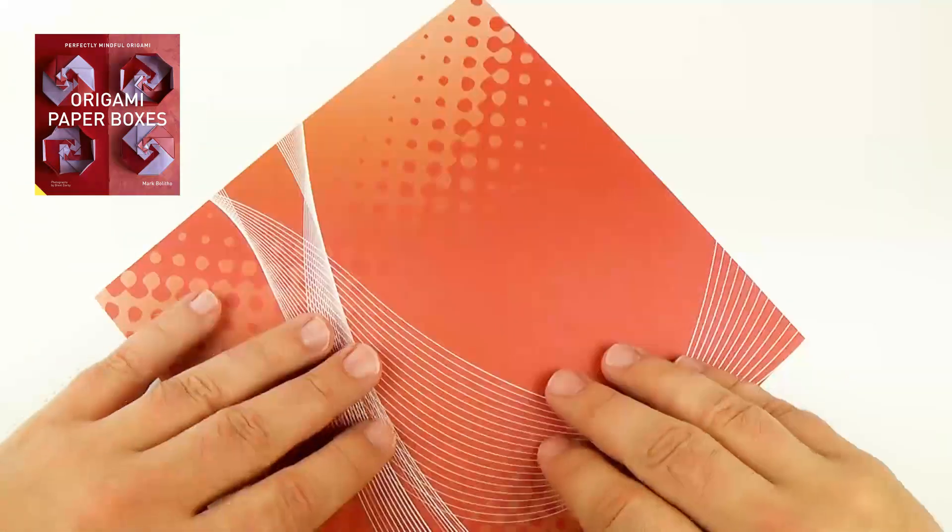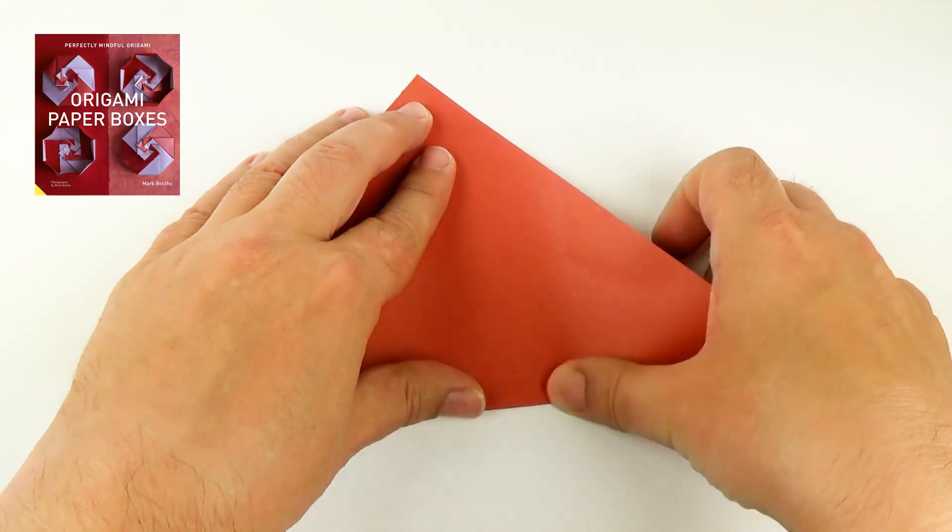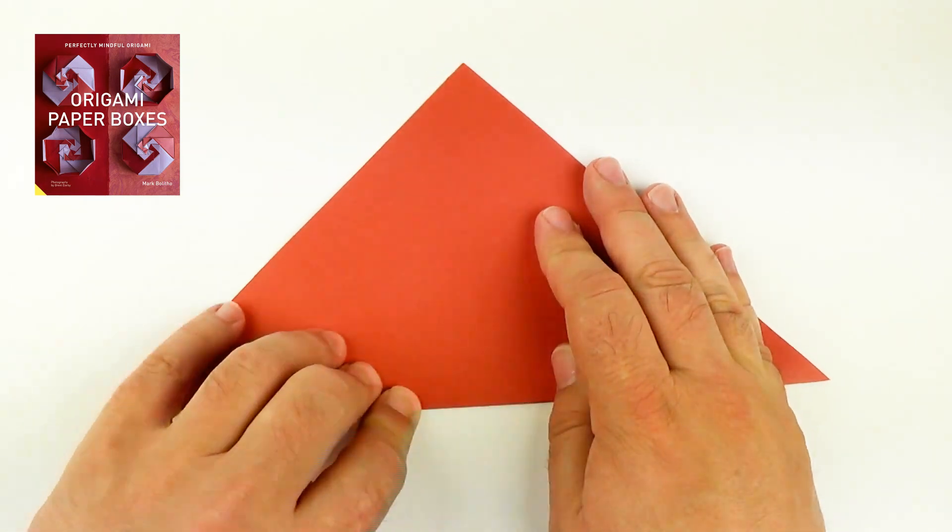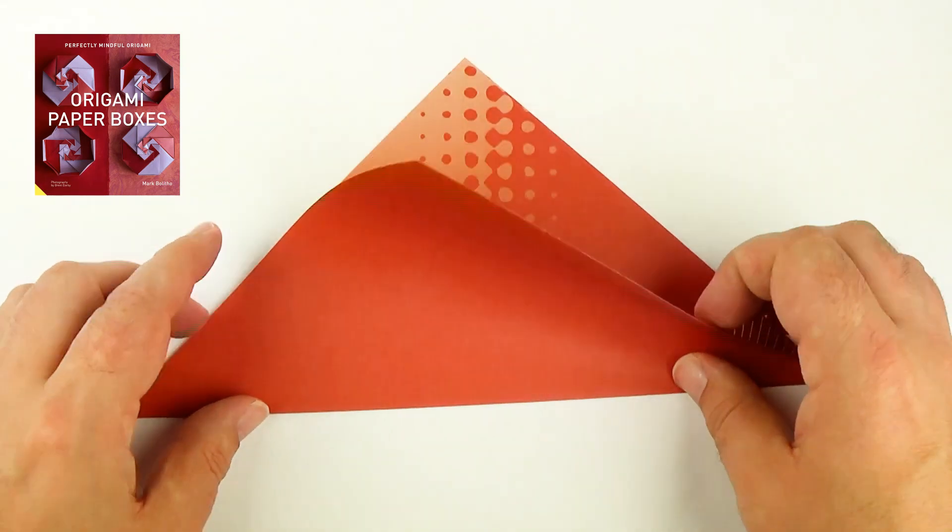So we start with a square, cut one side up, and fold it in half diagonally. To do that, align the corners, and then fold. Put a crease in, unfold.